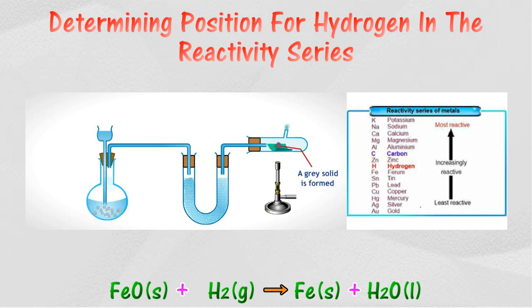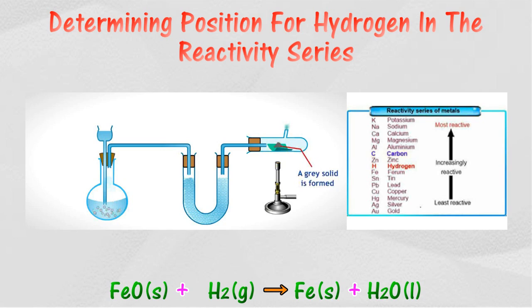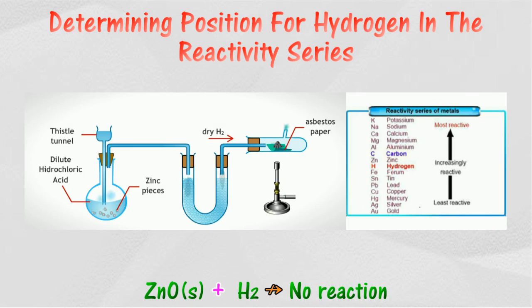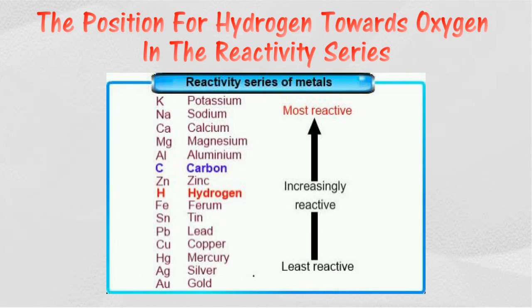If hydrogen is less reactive compared to a particular metal, then the embers cannot be seen when hydrogen gas is flowed over a hot metal oxide. The position of hydrogen in the reactivity series of metals is shown as follows.